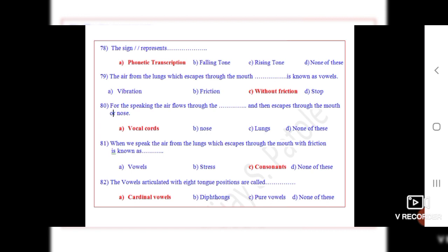Question 80: For the speaking of, the air flows through the dot dot and then escapes through the mouth or nose. The correct option is A, vocal cords.